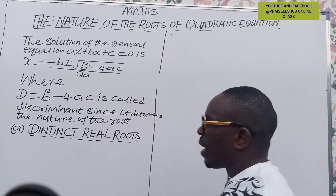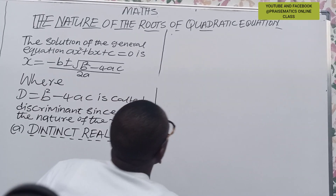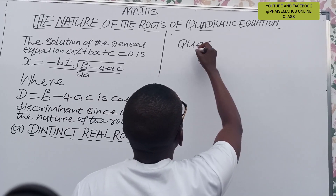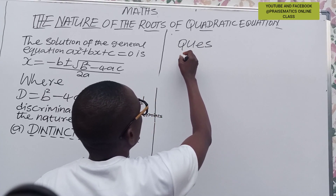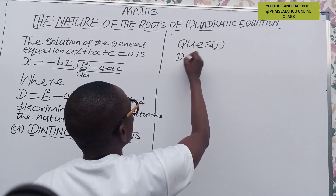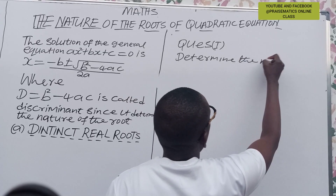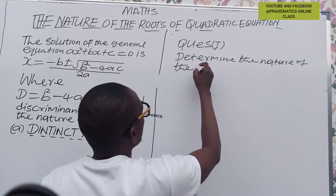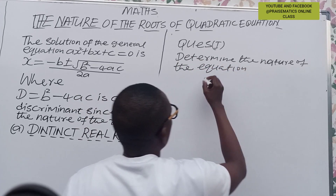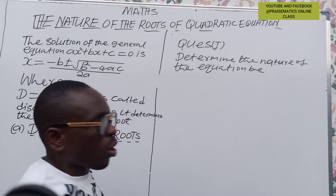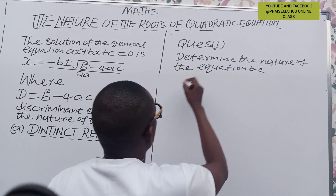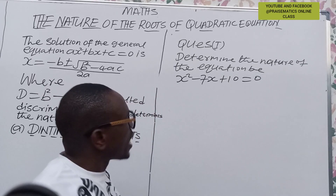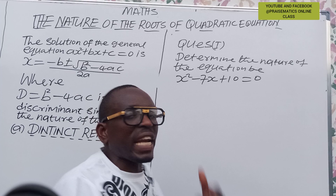Now let's look at question one. Determine the nature of the equation below: x² − 7x + 10 = 0. We are going to check whether, after solving this, the discriminant will be greater than zero.